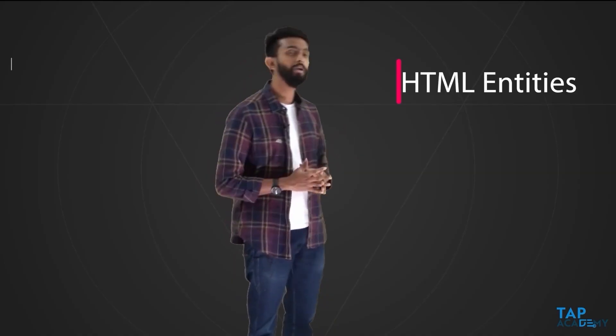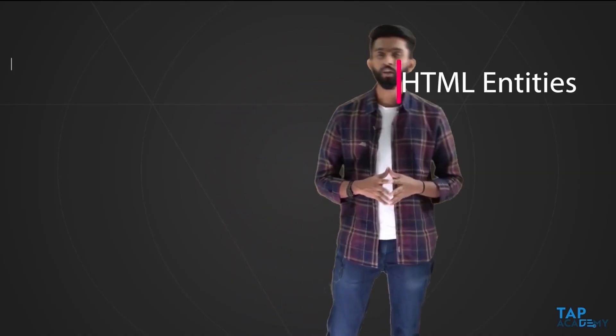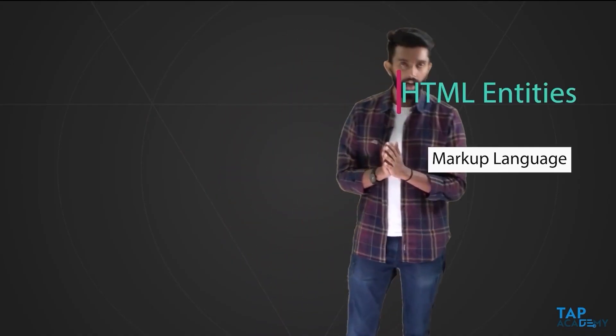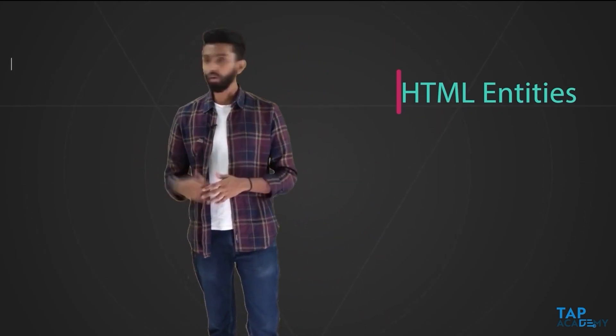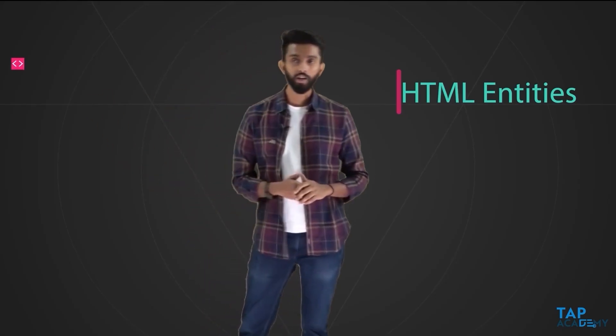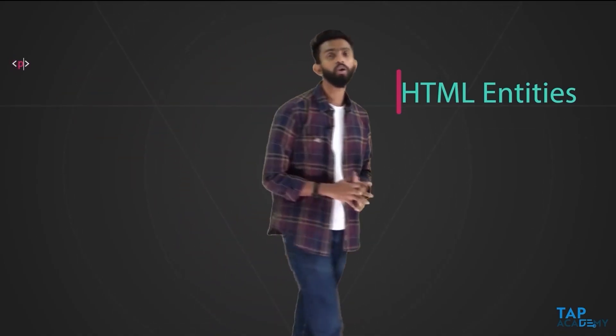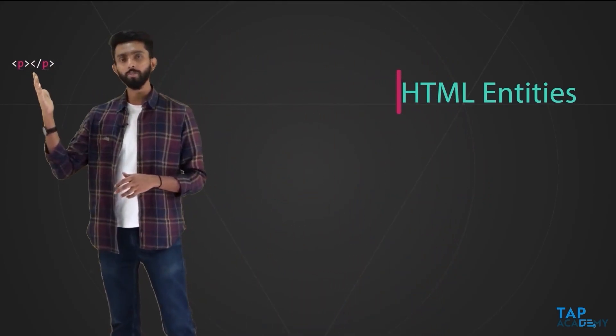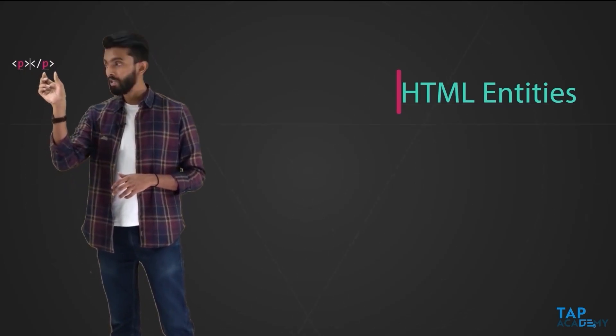Now it is time to learn something called HTML entities. HTML is a markup language made out of tags. A tag is represented with an opening less-than symbol and a closing greater-than symbol, with the tag name in between — for example, `<p></p>`. You can write whatever you want inside a `p` tag.